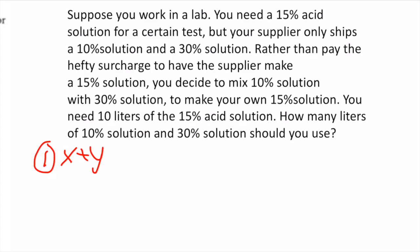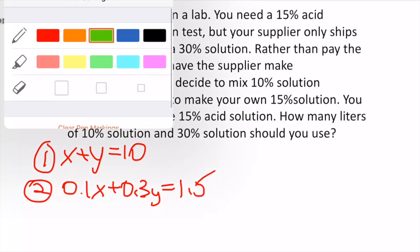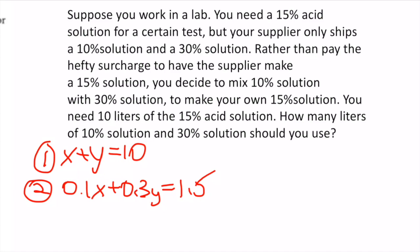Using substitution: the first equation has both coefficients equal to 1, so it's easiest to get y by itself. Moving x over: y = 10 - x.